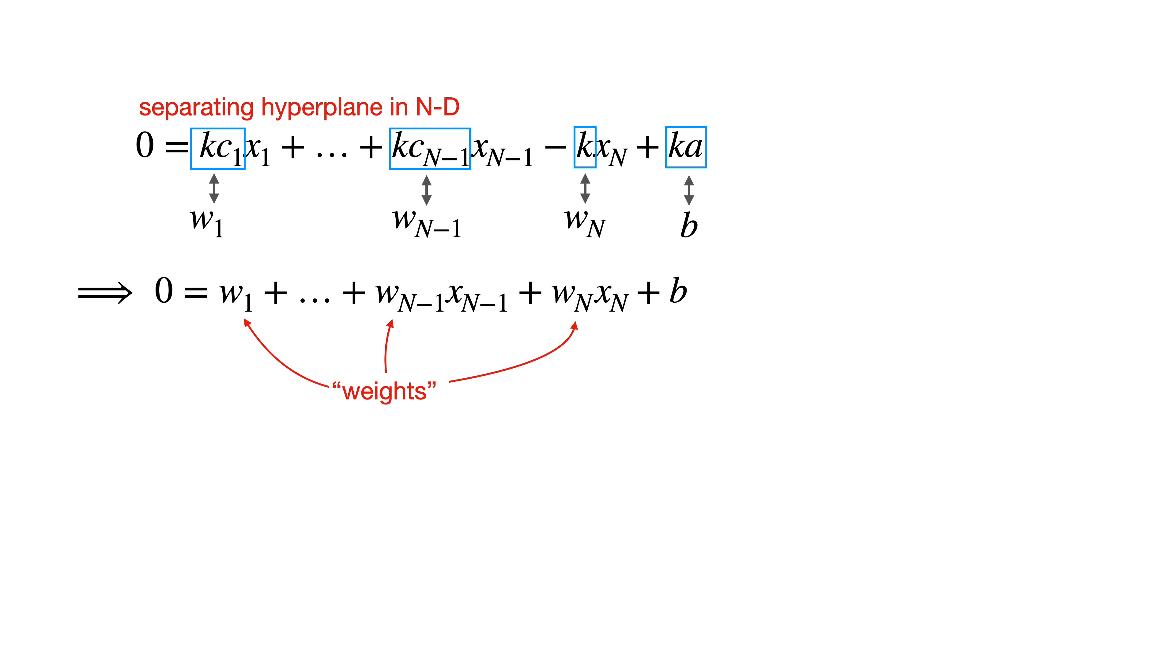I should mention that this equation allows for multiple representations of the same hyperplane. For example, in three dimensions, the set of weights 1, 2, 3 with offset 0 represents the same exact hyperplane as the set of weights 2, 4, 6 with offset 0. But that's fine, we can worry about that minor detail later.